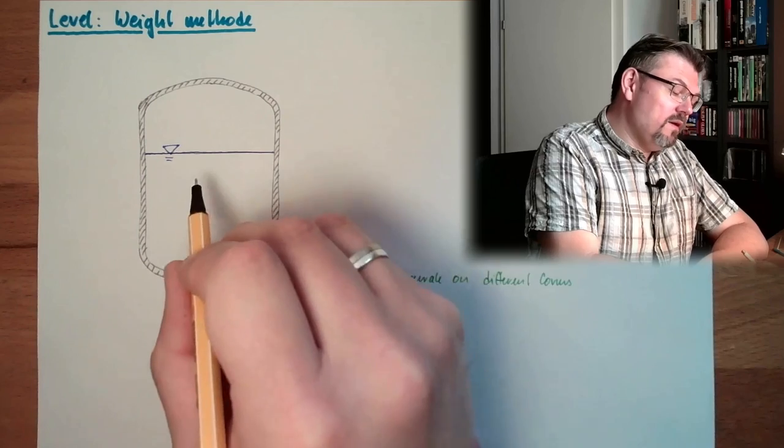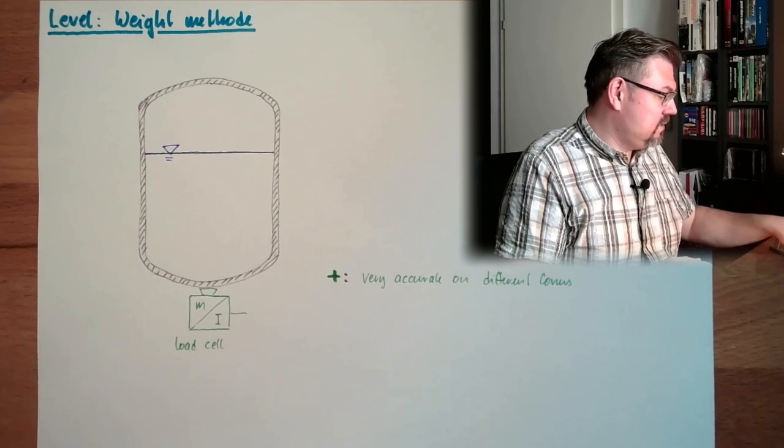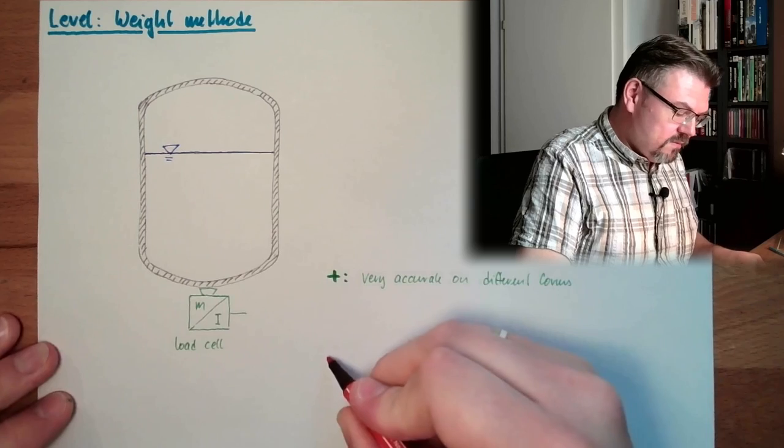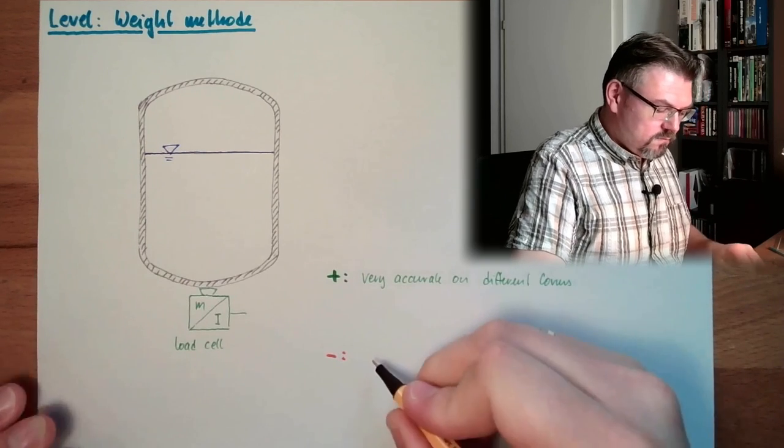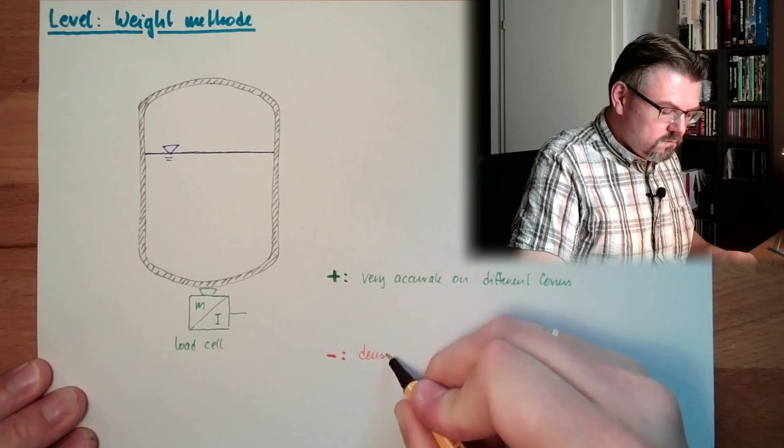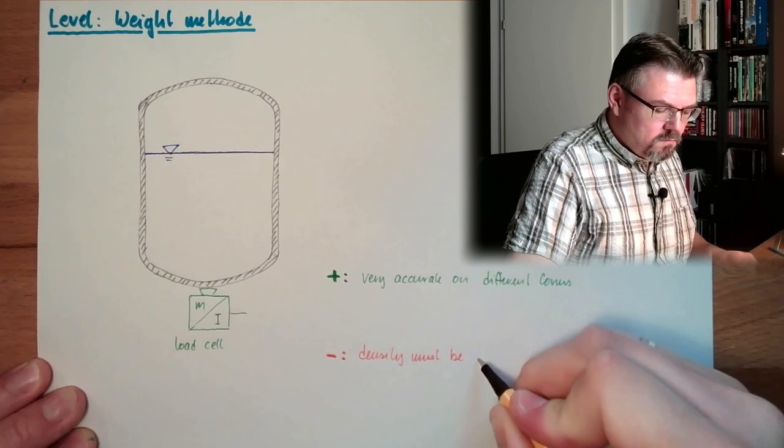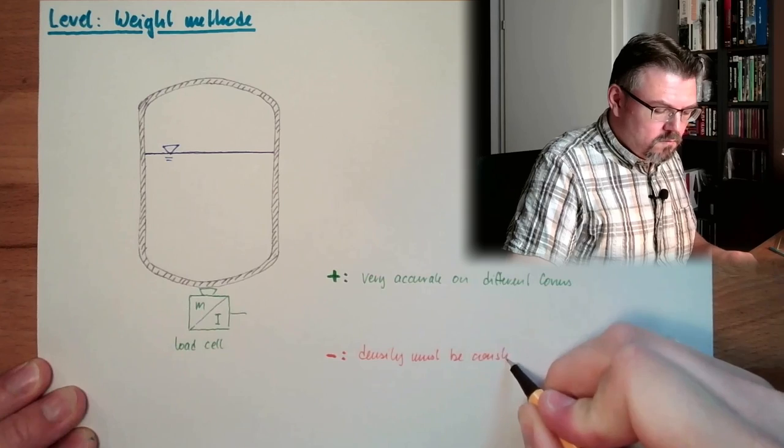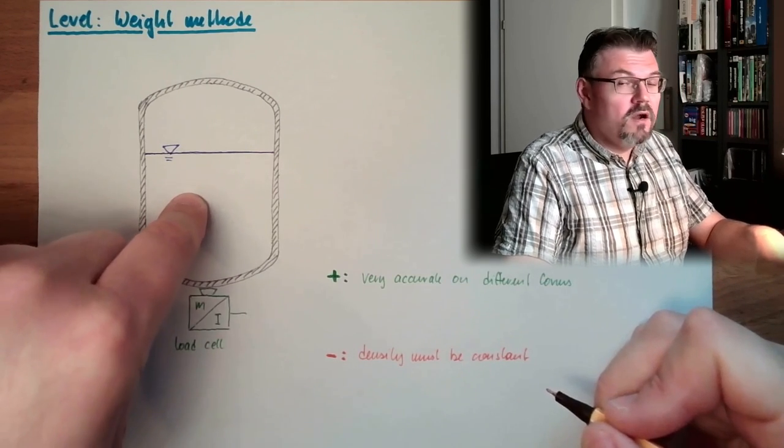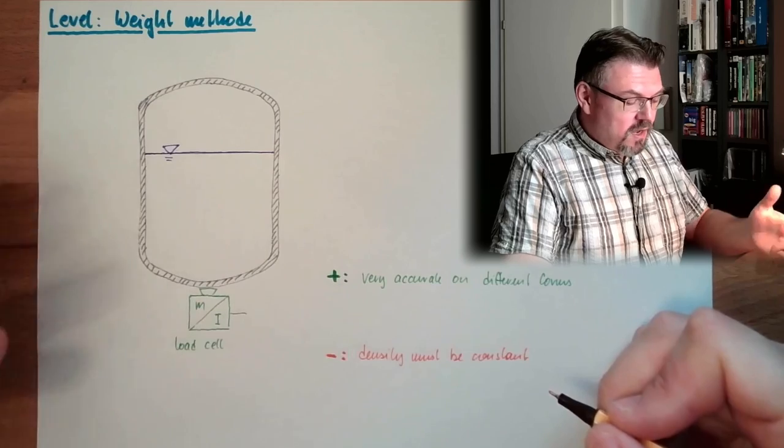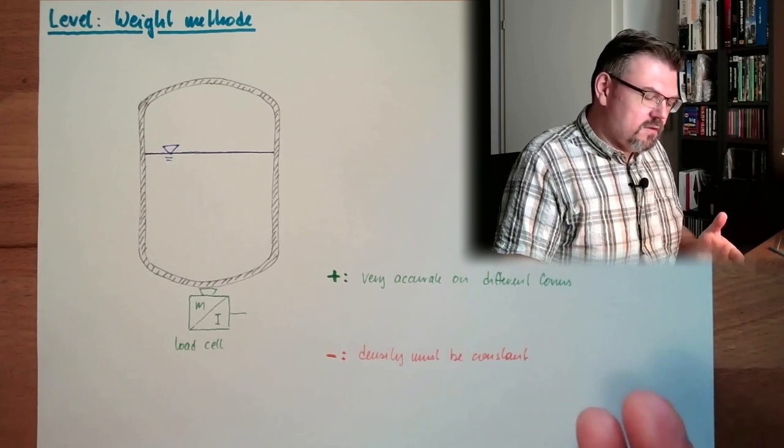However, the density must be constant, so that's negative. Density must be constant. If the density of this, whatever is in there, is changing, I measure non-correct values.